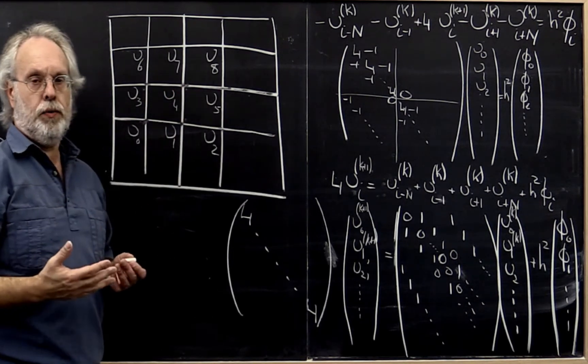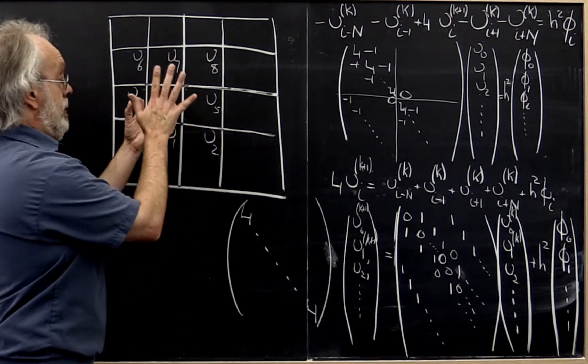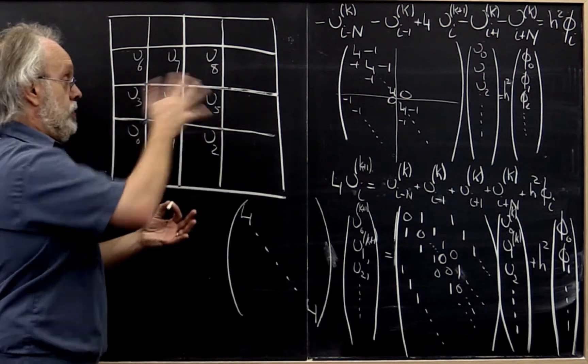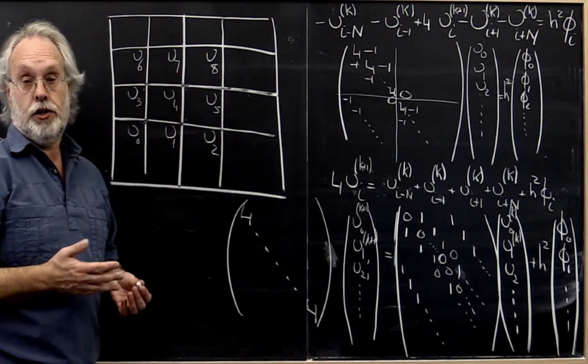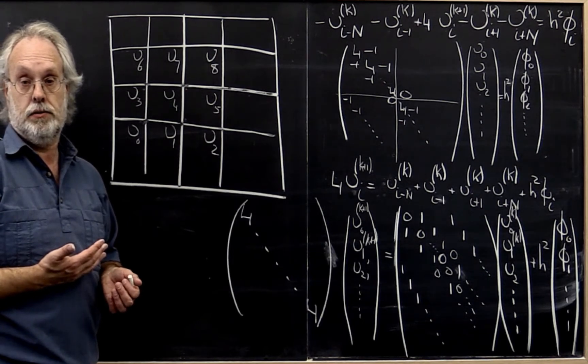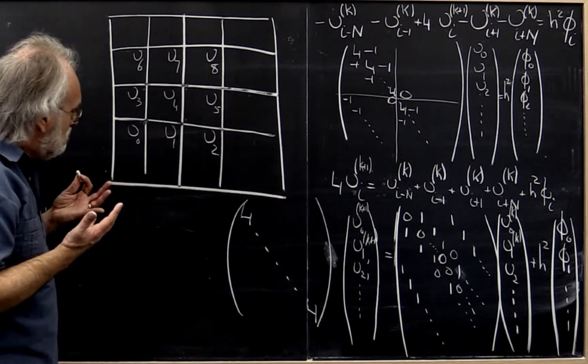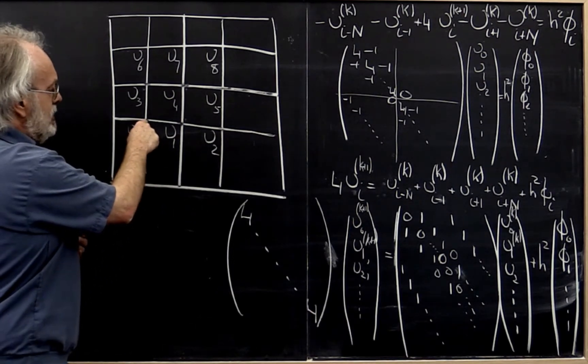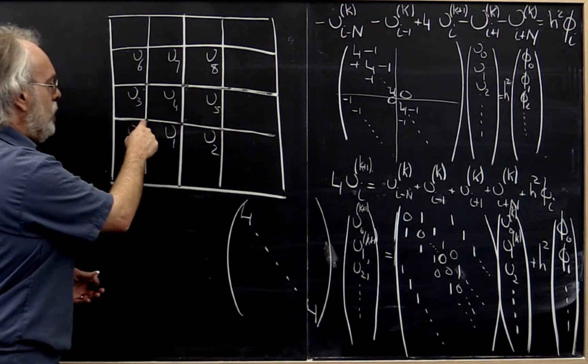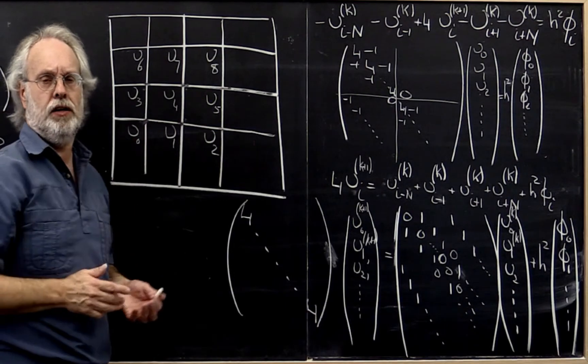And if you do the Jacobi iteration you end up, first of all, having to store the old values because otherwise you would use overwritten values. So you would need to double the amount of storage that you would have to keep around. And second, if you think about it, if I update this value then by the time I get to this value, why shouldn't I just go ahead and use the updated value here as opposed to the old value?